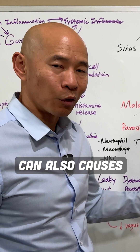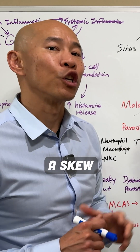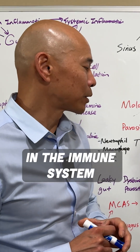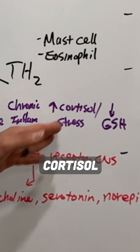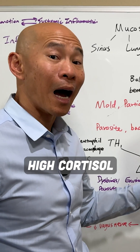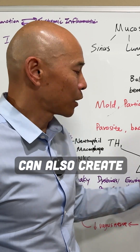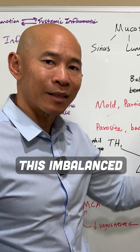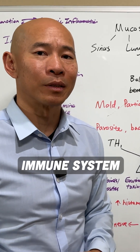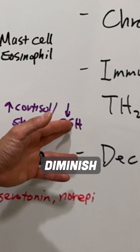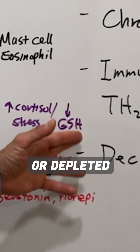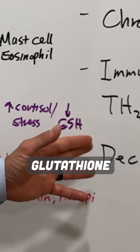Chronic inflammation can also cause this skew in the immune system. And also high cortisol due to chronic stress can create this imbalanced immune system, and even diminished or depleted glutathione.